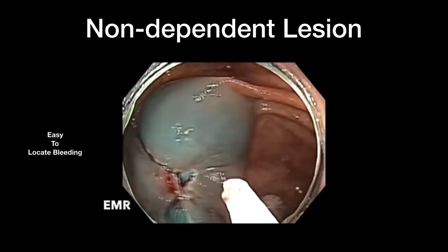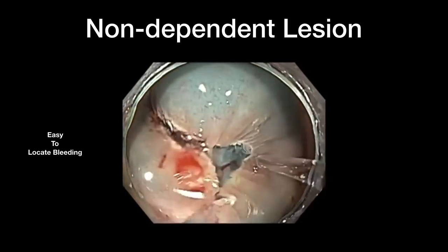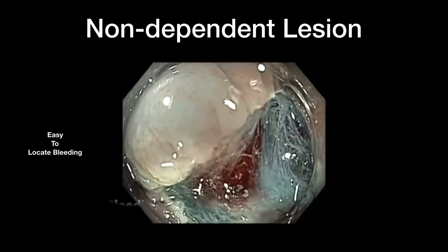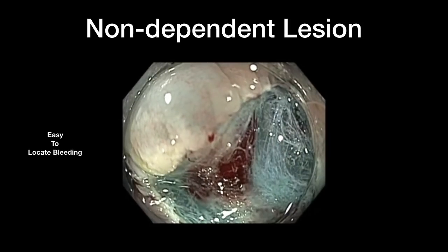We went ahead and did endoscopic mucosal resection in a piecemeal fashion. After resection of the second piece, we noted bleeding — an arterial spurter. This could be controlled with a snare by changing the settings on your electrosurgical generator to soft coagulation, or you could also control this bleeding with a coagulation grasping forceps. While your assistant is making arrangements, you could use the cap to apply tamponade and control bleeding, as shown here.